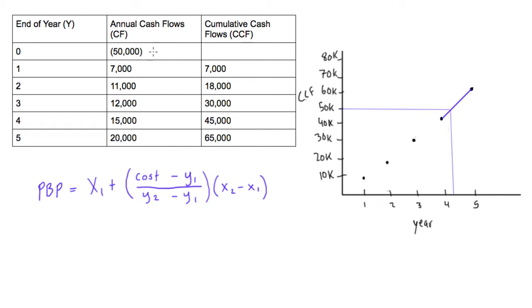So imagine we have this project here, it cost us $50,000 to accept, maybe we had to buy a bit of machinery or something. And then we have our annual cash flows here, giving us the cumulative cash flow, so this is how much money in total this project has brought in for us.